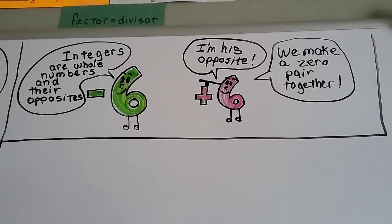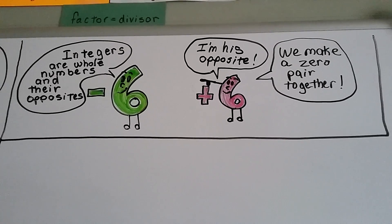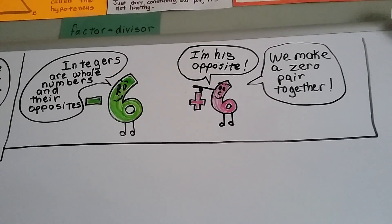Together they make a zero pair. You add them together and they equal zero. If you have negative 6 and you add a positive 6, you're at zero, right? It's a zero pair. They're buddies.